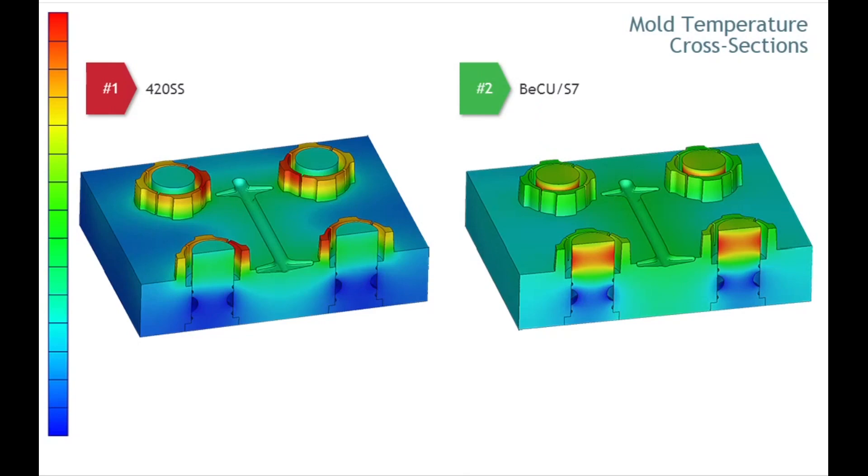The S7 center core shows the highest temperature near the top center and lowest temperature near the ring waterline. The mold thermal analysis indicates that the S7 core cannot remove heat from the center core to the waterlines very quickly due to its lower thermal conductivity.